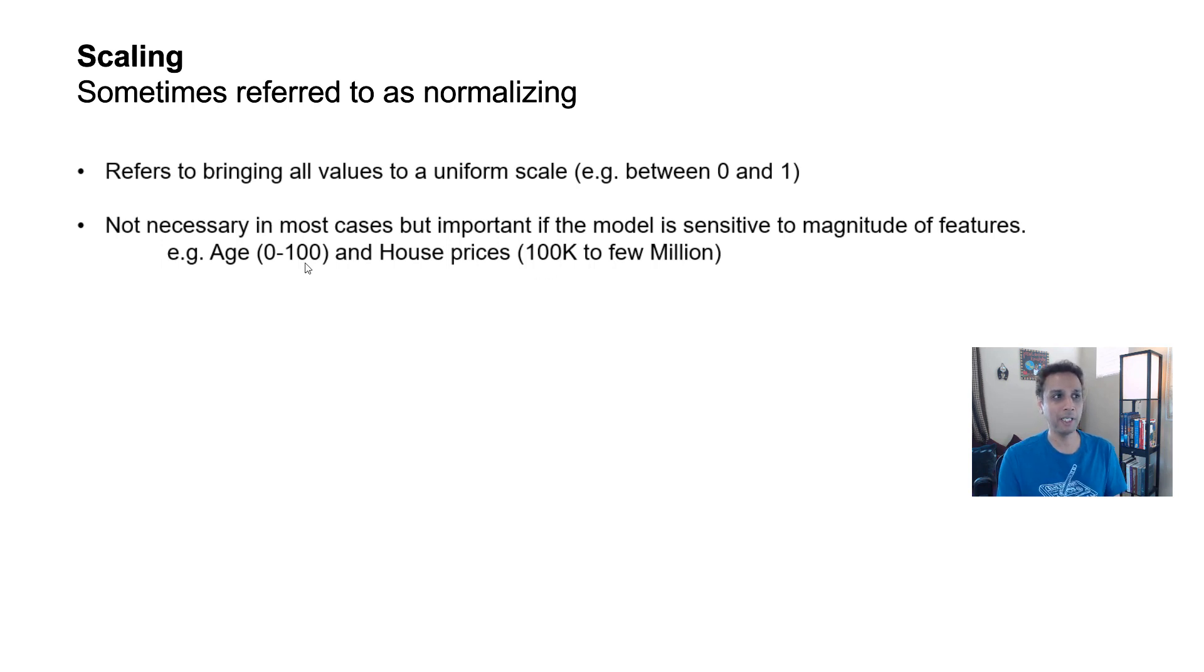If the house is 1 million, then maybe certain age groups may not be able to afford that type of price. So one of the features would be age, ranging from 0 to 100. The other is housing price, which can be 100,000 to a million dollars. But if you scale age by dividing by 100, then your values lie between 0 to 1. Same with your housing prices. You can force them to be between 0 to 1. This is what scaling is referring to.